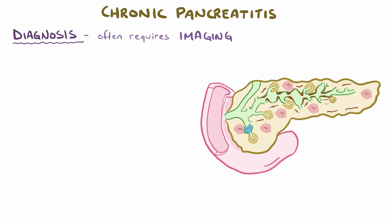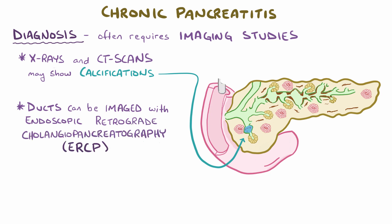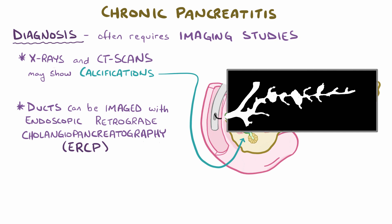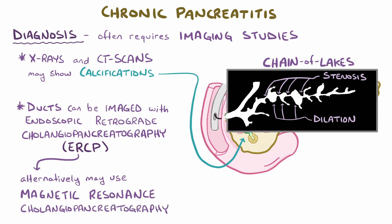Often the diagnosis relies on imaging studies that can identify structural changes to the pancreas. For example, abdominal x-rays and CT scans might show calcification of the pancreas. The pancreatic ducts themselves can be visualized with endoscopic retrograde cholangiopancreatography, or ERCP, a technique where an endoscope is passed down through the mouth to the duodenum to deliver contrast medium to the pancreatic ducts. Subsequent fluoroscopy contrast studies can reveal structural changes—for example, the duct might take on a chain of lakes pattern due to alternating stenosis and dilation. An alternative technique is magnetic resonance cholangiopancreatography, or MRCP.